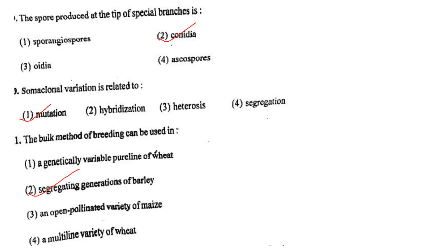Next one: Somaclonal variation is related to option 1, mutation; option 2, hybridization; option 3, heterosis; option 4, segregation. Answer is option 1: mutation.